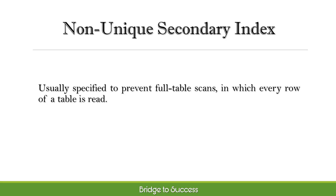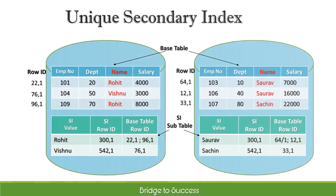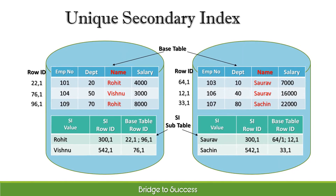A non-unique secondary index is usually specified to prevent full table scans, in which every row of a table is read. Let's see the steps involved to load the subtable for non-unique SI. Here, name is our non-unique secondary index. Teradata will first create the subtable on all AMPs. Each AMP will hold the secondary index values for their rows in the base table only, and each AMP will have the base table row ID pointer so the AMP can retrieve it quickly if needed. If an AMP contains duplicate SI values, only one subtable row for that value is built with multiple base row IDs.